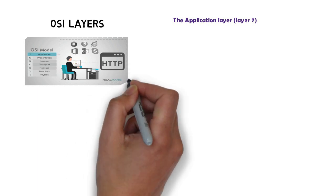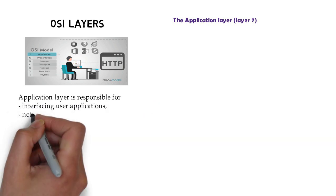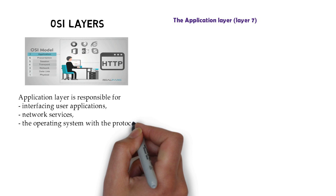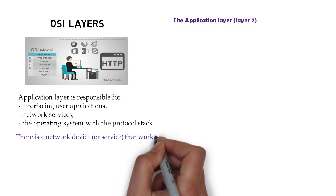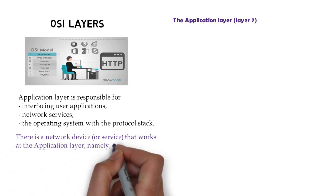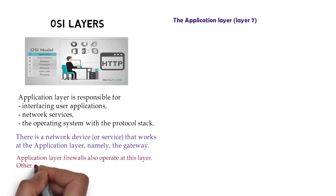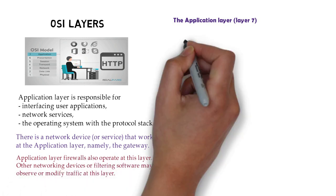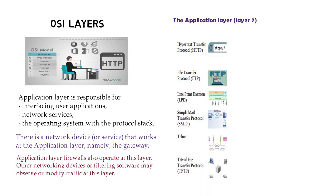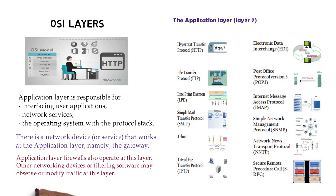Now OSI layer 7 in detail: the application layer. The application layer is responsible for interfacing user applications, network services, and operating systems with the protocol stack. Gateway networking devices work at this layer. Application layer firewalls also operate here, and other filtering software may observe or modify traffic at this layer. Some protocols are HTTP, FTP, LDAP, SMTP, Telnet, POP3, RPC, and EDI.